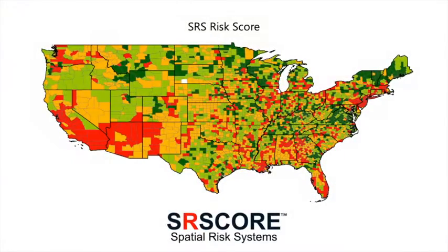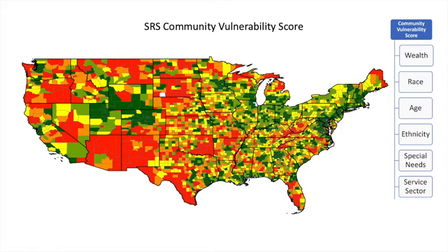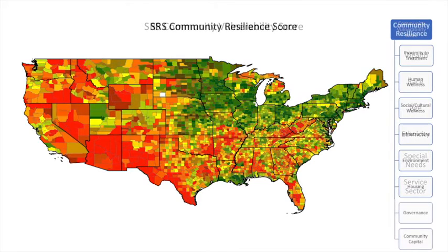The SRS risk score is comprised of hundreds of factors grouped into four component scores. Community vulnerability touches on demographic issues such as wealth or poverty, race, age, ethnicity, special needs, and more.